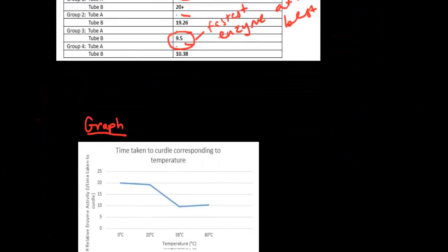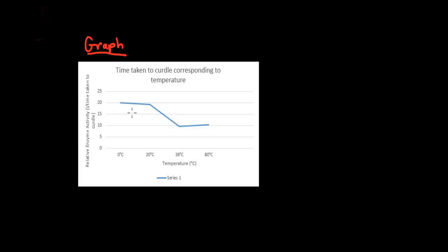Here's a graph I drew in Microsoft Word. The y-axis shows time taken to curdle, and the x-axis shows temperature in degrees Celsius: zero, 20, 38, and 80 degrees. The title is time taken for milk to curdle corresponding to temperature. As you can see, the lowest time is at 38 degrees, showing that's the optimal temperature.